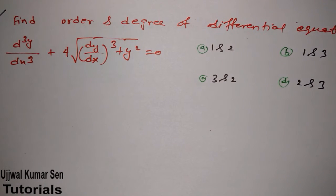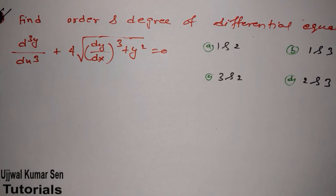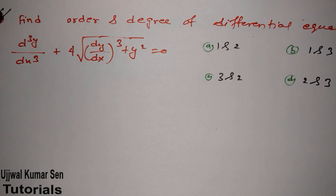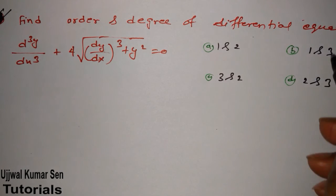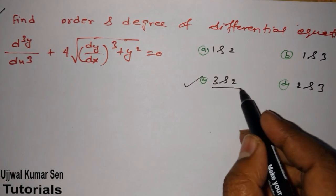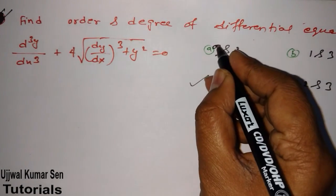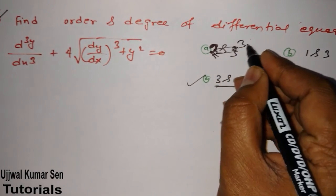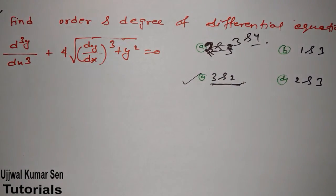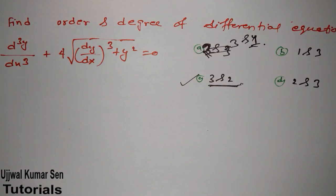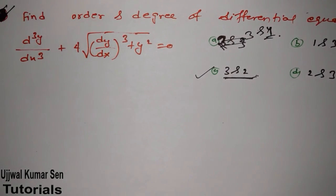Let's move to the next question, which requires a little bit of concept and approach. Here we are asked to find the order and degree of a differential equation. First, find the maximum derivative — that is the first term — so the order is three. But suppose the options include three-two, two-three, three-four, and three-one. Now what will you choose? That matters.